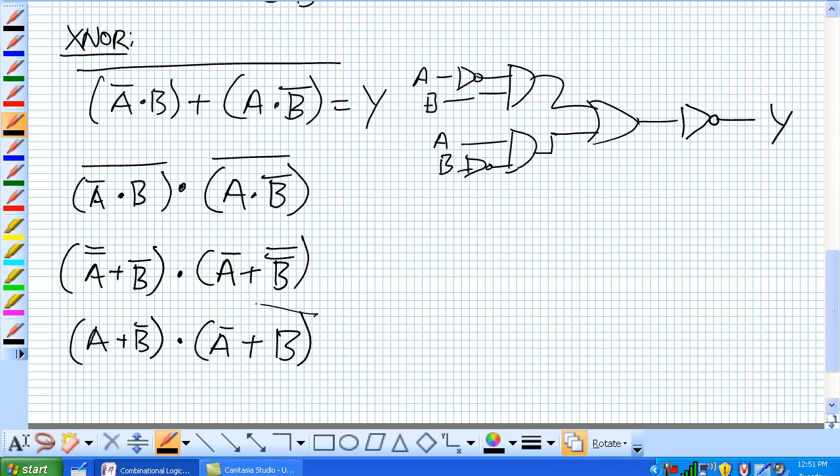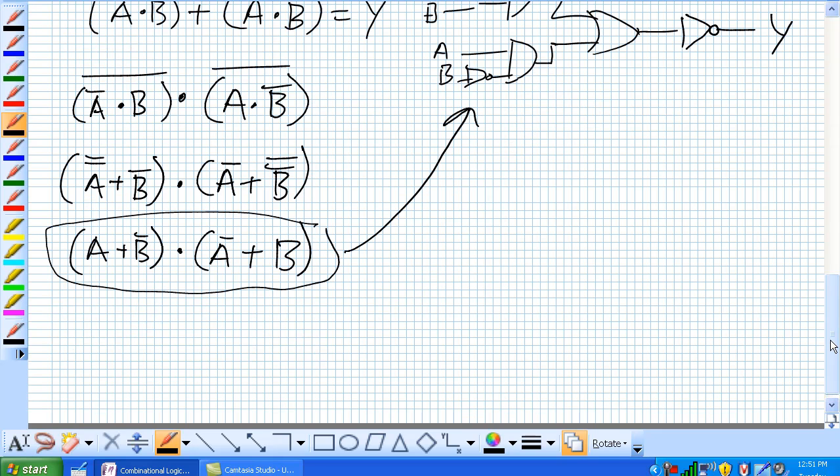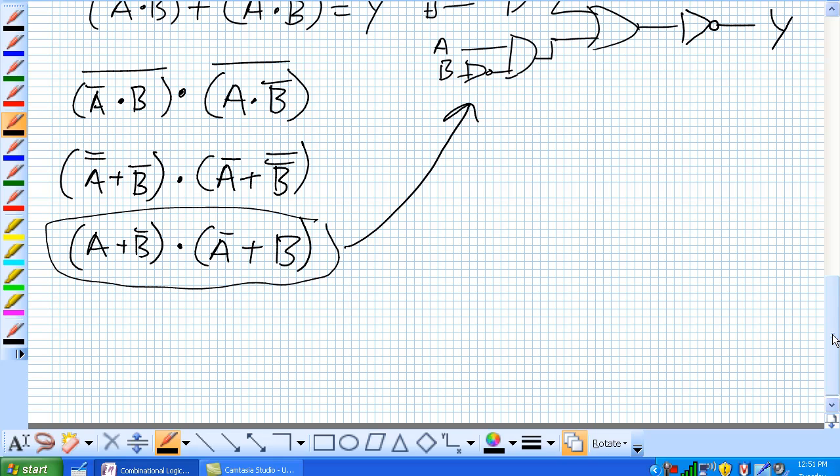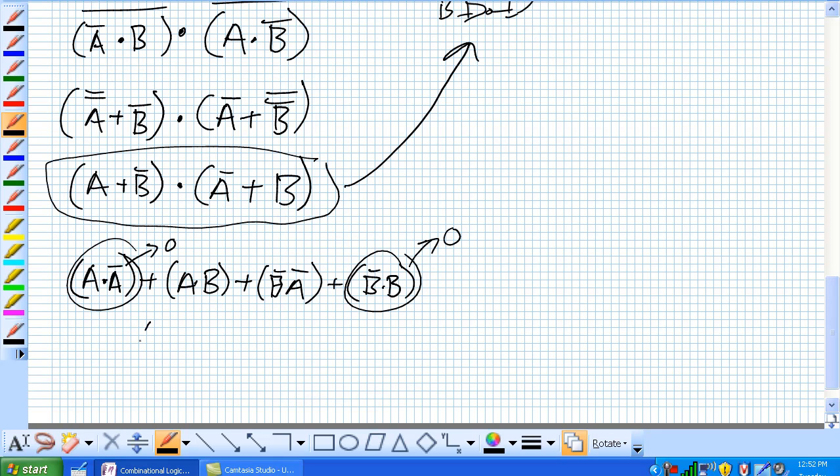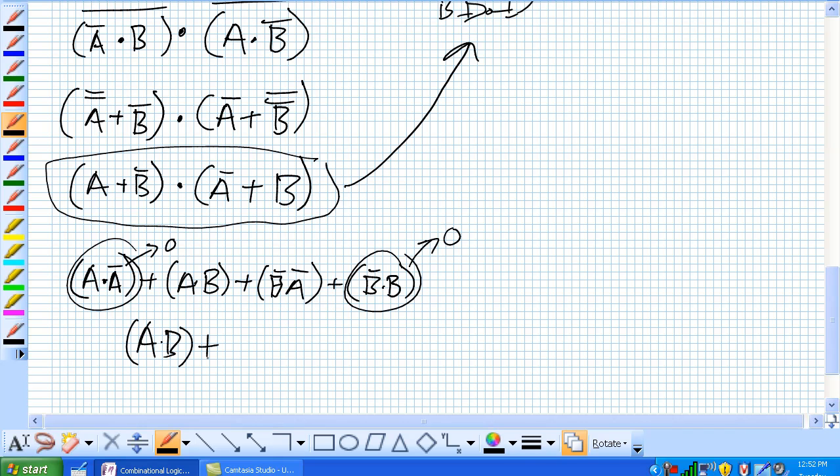To come up with a product of sums implementation. So, this right here and or invert is the expression of that product of sums. But, let's say that we do not want to do a product of sums or an and or invert, we want to do and or combinational logic. Well, keep on going. Just do the FOIL method for this. First, outer, inner, last, but check these guys out. Those are zeros according to our laws of Boolean algebra. And, we get A and B or not B and not A.